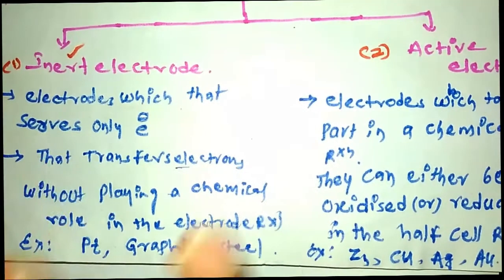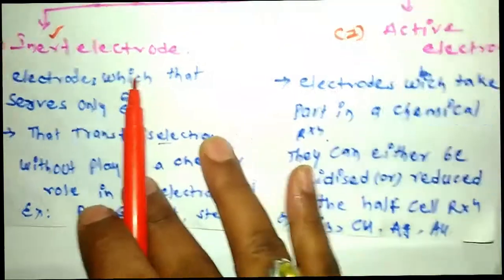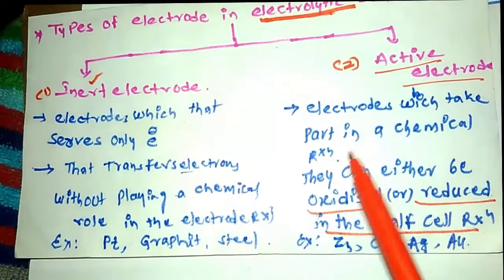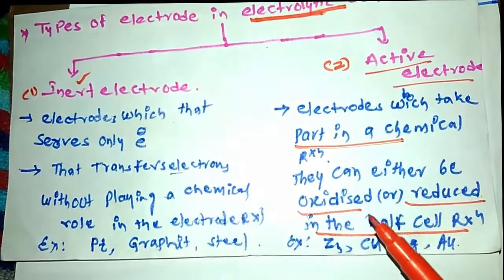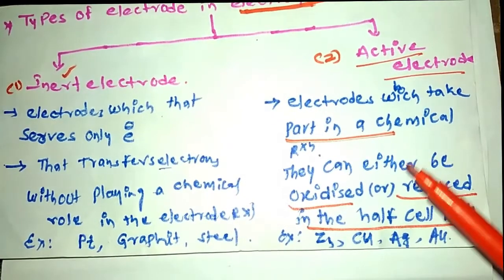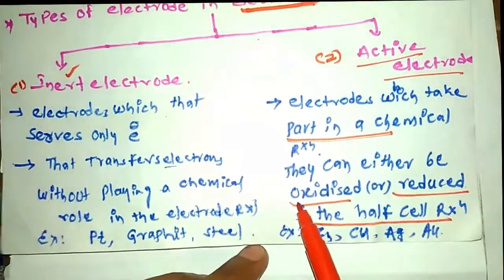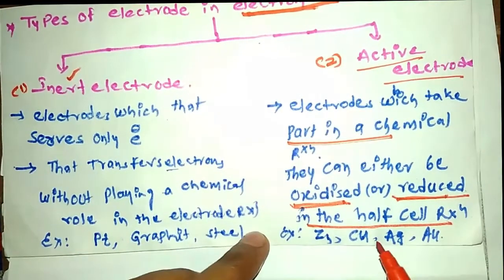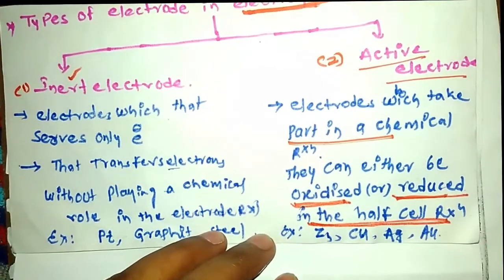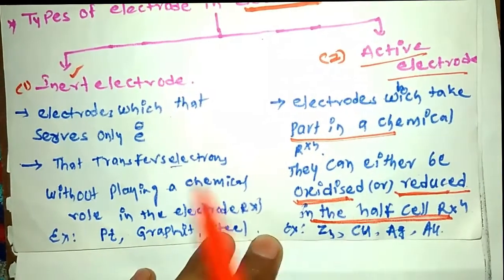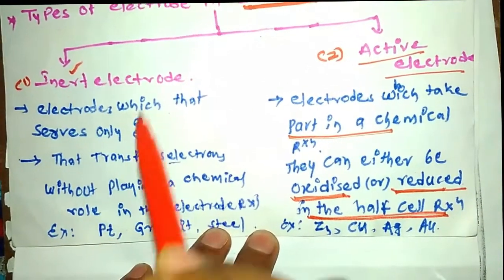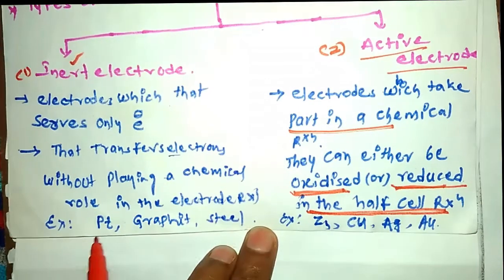Next is the active electrode. The active electrode is the one which takes part in the chemical reaction — it is involved in the chemical reaction. That means it can either be oxidized or reduced. Oxidized means loss of electron, or it may be gain of electron in the course of the reaction. That type of electrode we call the active electrode.